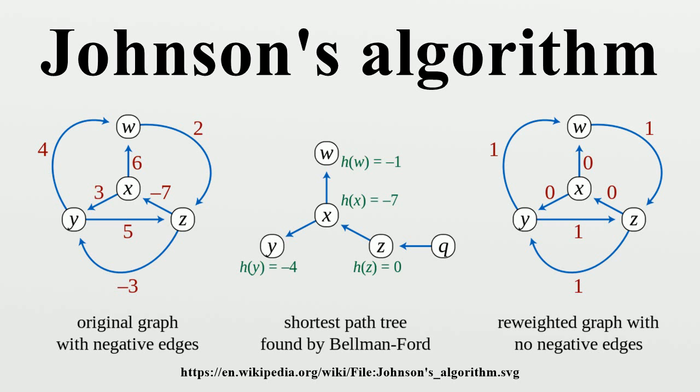A similar reweighting technique is also used in Suurballe's algorithm for finding two disjoint paths of minimum total length between the same two vertices in a graph with non-negative edge weights.